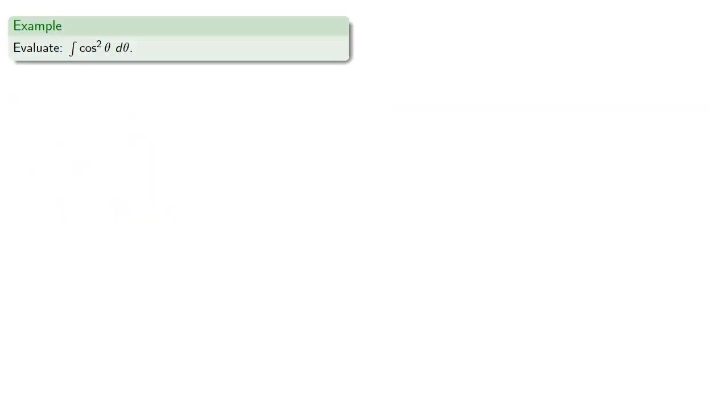So, for example, let's find the integral of cosine squared. Now there's a reduction formula for powers of sine and cosine, but if you don't remember it, what can you do?